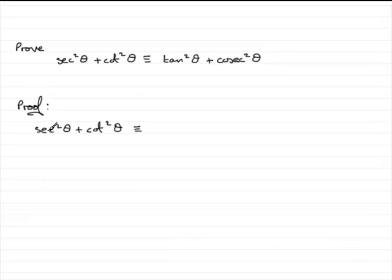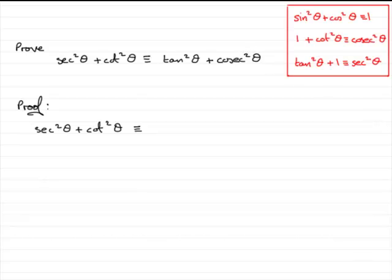So I'm looking for identities that have got these functions in and look as if they head towards these functions. Those identities that you should be familiar with are essentially these two here. They come from the identity sine squared theta plus cos squared theta is identical to 1.